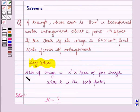Now, according to the formula given in the key idea, area of the image equals k squared times area of the preimage.